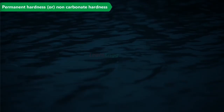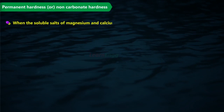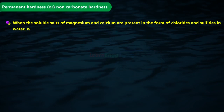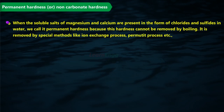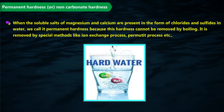Permanent hardness, or non-carbonate hardness, occurs when soluble salts of magnesium and calcium are present in the form of chlorides and sulfates in water. This hardness cannot be removed by boiling; it is removed by special methods like the ion exchange process, the zeolite or permutit process, etc.